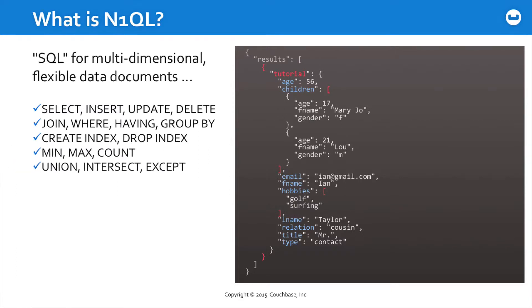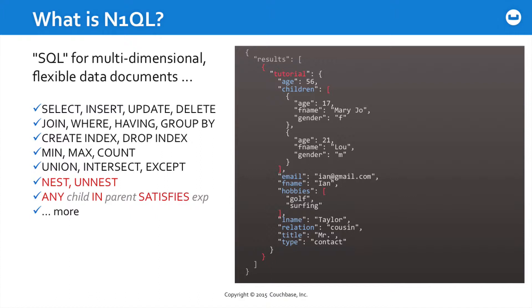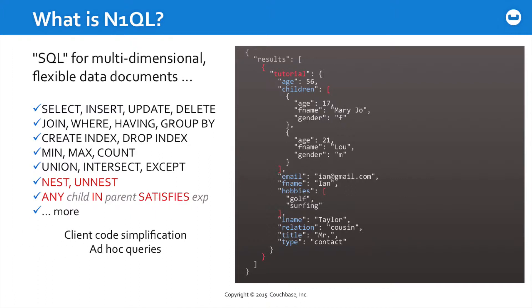All the language elements that you expect from SQL are available to you. In addition to this, there are other statements that are specific to the powerful nature of JSON as a data storage and interchange format — statements like NEST and UN-NEST to surface or wrap portions of documents within others, as well as the ability to execute expressions like returning documents where any child within a particular parent within a document satisfies a condition that you specify. N1QL allows you to dramatically simplify and centralize the code that you write, as well as support ad hoc queries.